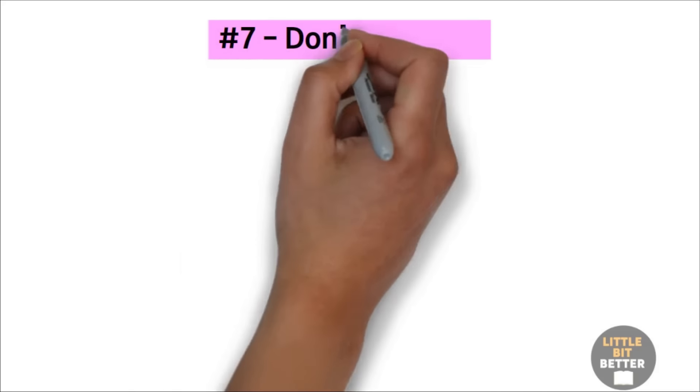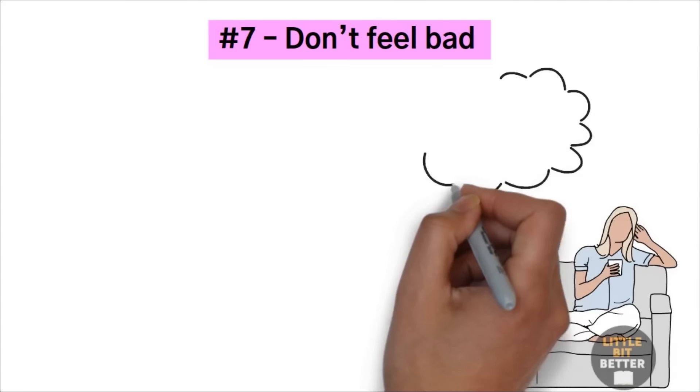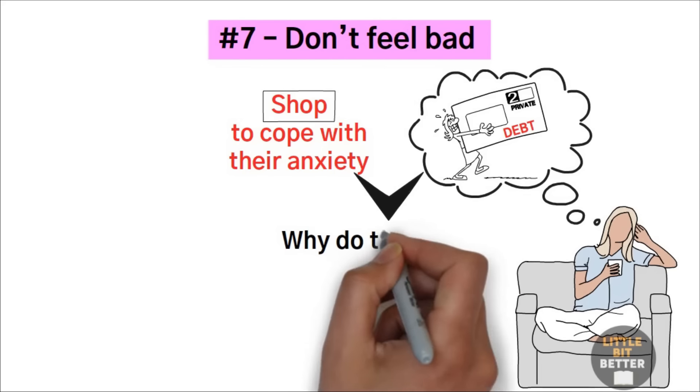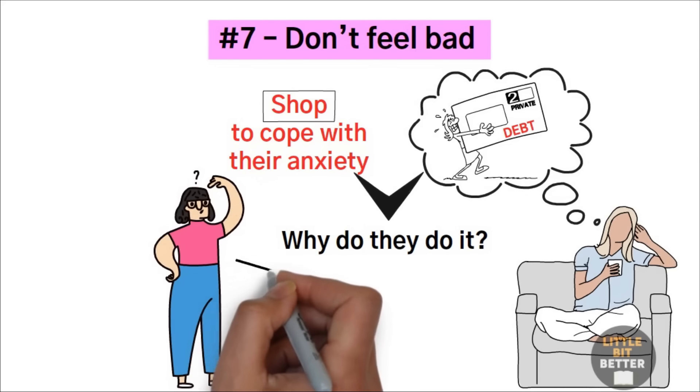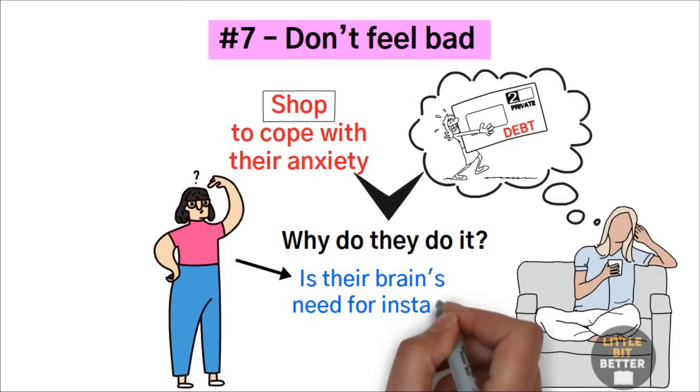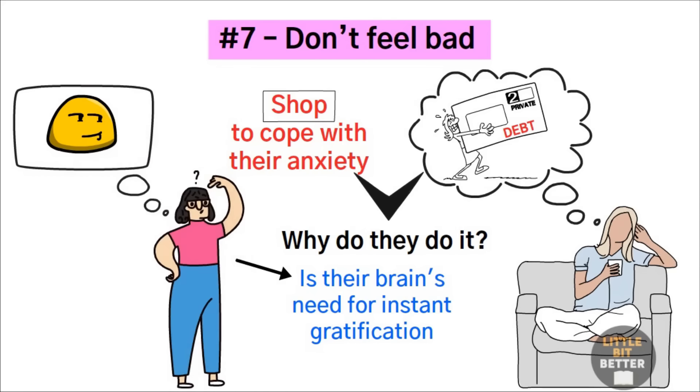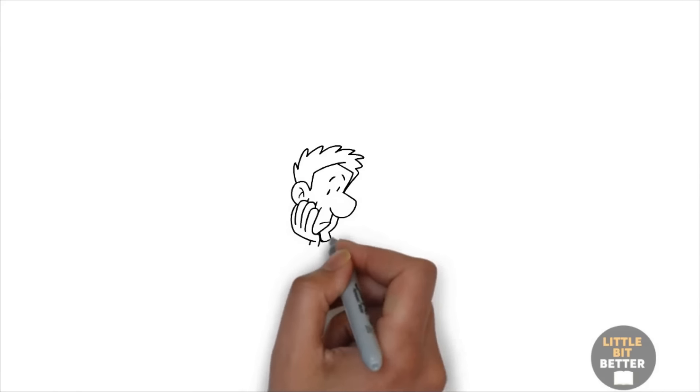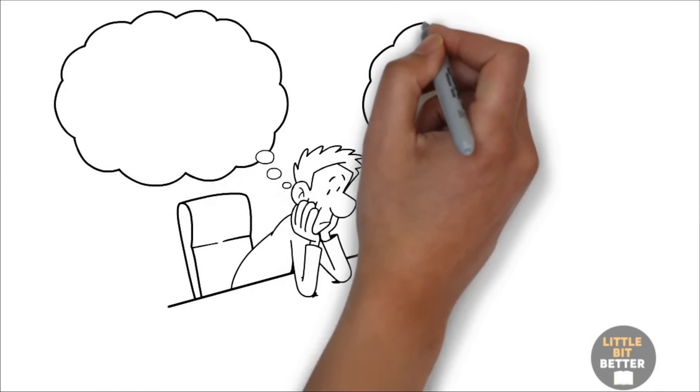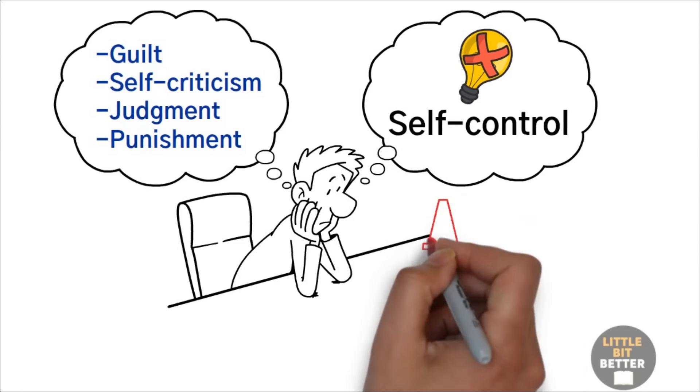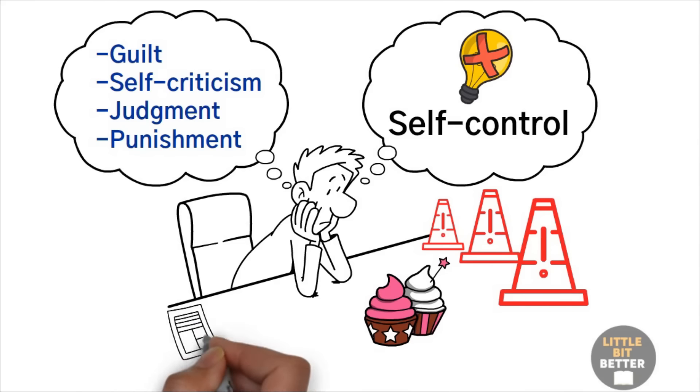Number seven, don't feel bad. Surveys show that women who are worried about their finances shop to cope with their anxiety. Yes, you heard that right. Shop. They're just adding to their debt, which will make them feel even more overwhelmed later. So why do they do it? Because instead of conscious reasoning, what leads them to do that is their brain's need for instant gratification. They want to feel better now, no matter the cost. Feeling bad leads to giving in. It might not make sense, but that's how humans work. That's why guilt, self-criticism, judgment, and punishment are terrible strategies of self-control. They make you stressed and therefore more vulnerable to temptation and more prone to procrastination.